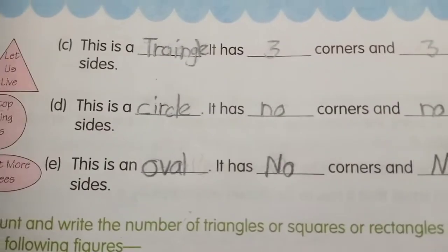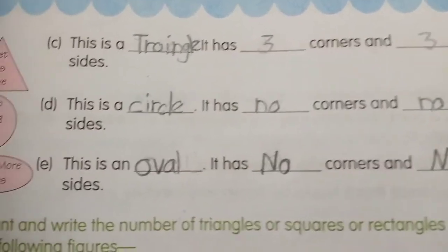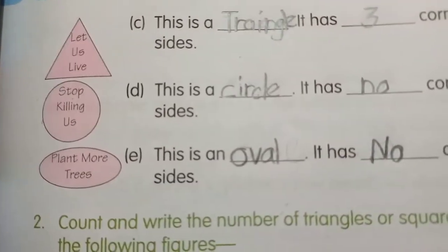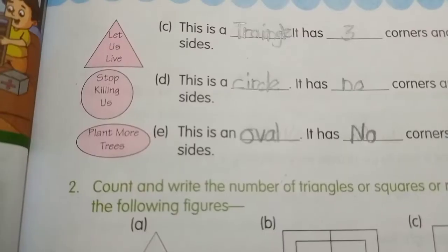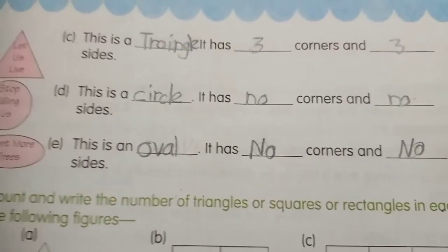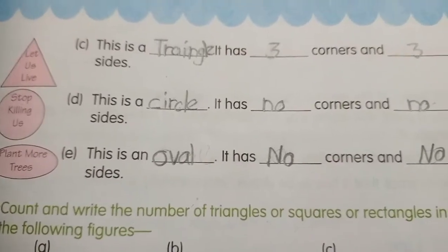D. This is a dash. It has dash corners and dash sides. This is a circle. It has no corners and no sides. E. This is a dash. It has dash corners and dash sides. This is an oval. It has no corners and no sides.